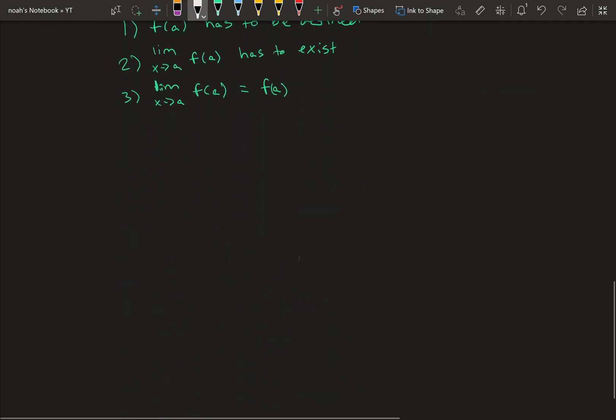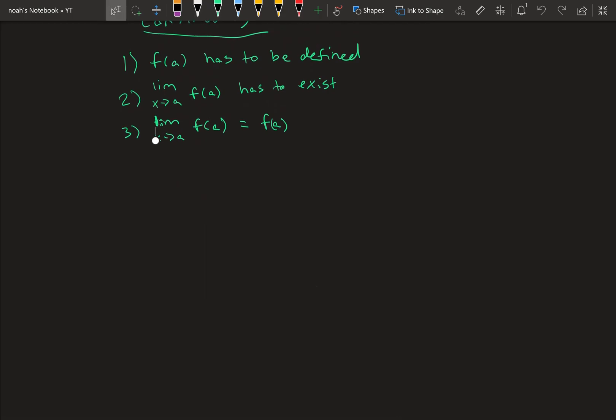Some other things about limits. Say we have, say we're trying to solve a limit, we have no graph, it's just limit as x approaches, let's use a again, of, say the function is x, and this would just be a. So that's a simple rule. And same if it was limit as x approaches a, x to the n, it would still be a to the n, so you just substitute the a for x.